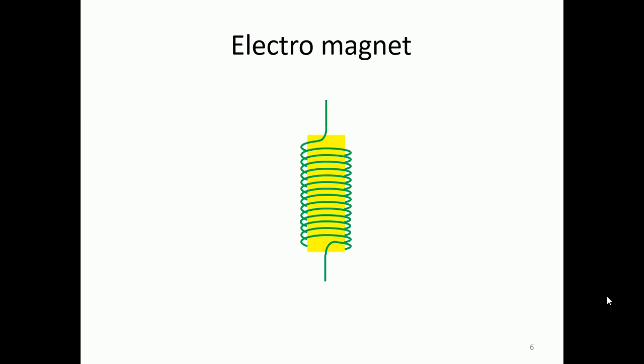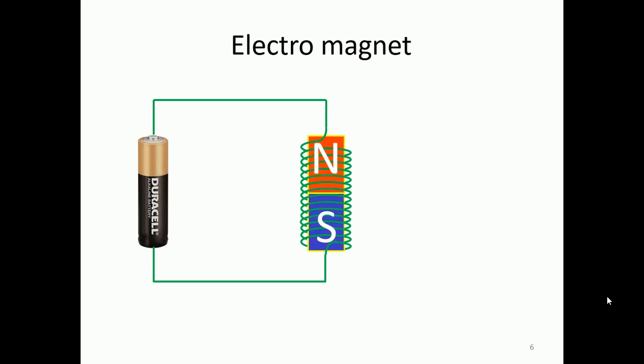An electromagnet is basically a piece of iron and around it you wrap an insulated piece of wire. And then if you let the current go through this piece of wire, then you will have a north pole and south pole being generated inside of this metal and that is now a magnet.